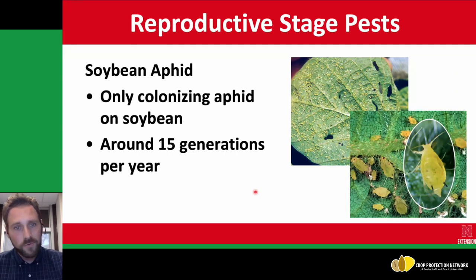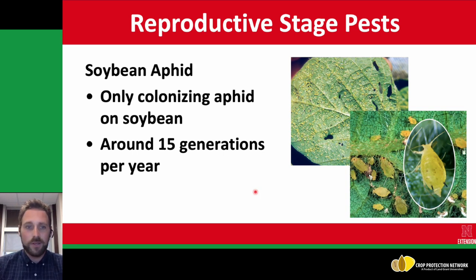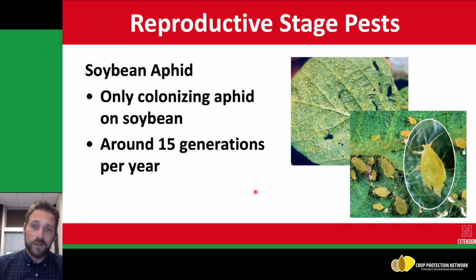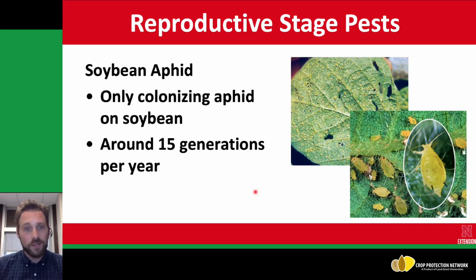Another one to mention is soybean aphid. This is the only colonizing aphid that can be found on soybeans in the U.S. They can grow to very large numbers. In recent years, they haven't been as big of a problem — more Minnesota areas are seeing a lot of these, while in Nebraska and other areas we don't see as much. There are a lot of beneficial insects that feed on this and they quickly get parasitized. But they have a lot of generations each year, so this is an important one to scout for. You may find it in patches, very solidified patches in the field, depending on its introduction.